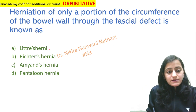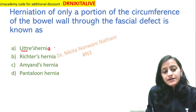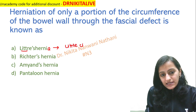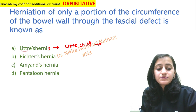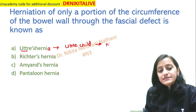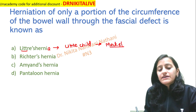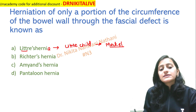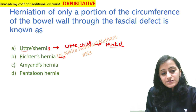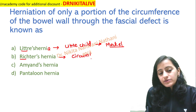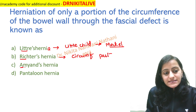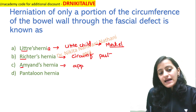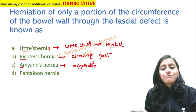How do we remember Littré's hernia? Littré is like a little child, and the bowel diverticulum seen in a little child is Meckel's diverticulum. So when the hernia sac contains Meckel's diverticulum, it is Littré's hernia. For Amyand's hernia, A stands for appendix — when the sac contains the appendix, it is Amyand's hernia.